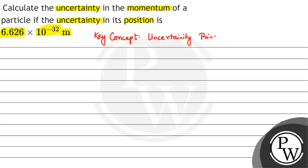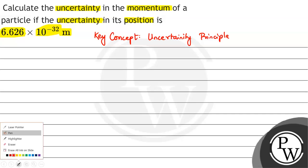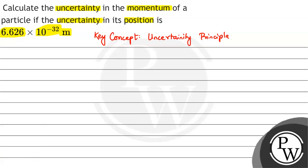What does the uncertainty principle say? The uncertainty principle says that at a particular moment in time we cannot accurately predict both the position and the momentum of a fast-moving electron. If we mathematically represent this, we write delta x, which is the uncertainty in position, multiplied by delta p, which is the uncertainty in momentum.